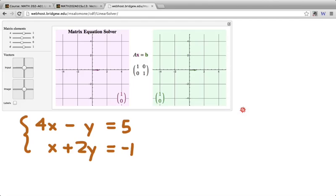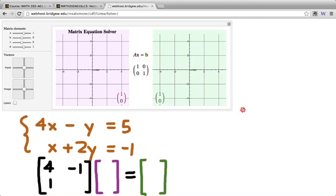So if I were to reformulate this as a matrix equation, what would it look like? What would my matrix be? And then what is my input vector? And then what is my image vector? What does this look like as a matrix equation? What is, well, what's my matrix here? Right. Again, it's just those coefficients. 4, negative 1, 1, 2.